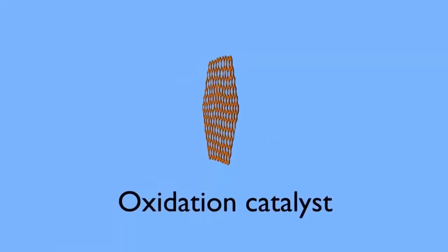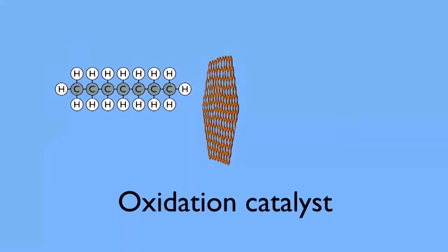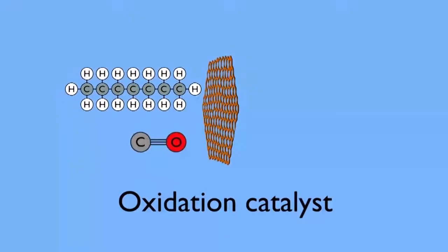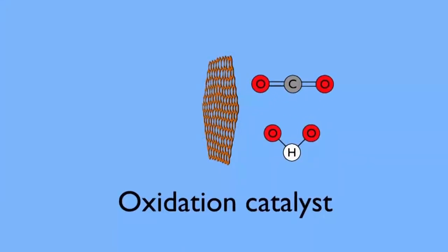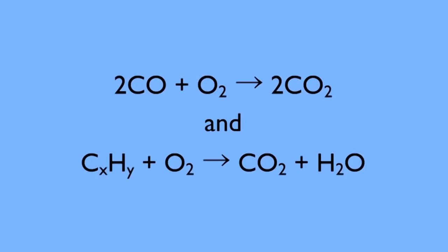The oxidation catalyst is the second stage of the catalytic converter. It oxidizes the unburned hydrocarbons and carbon monoxide by burning them over a platinum and palladium catalyst. The equation for this is shown here.